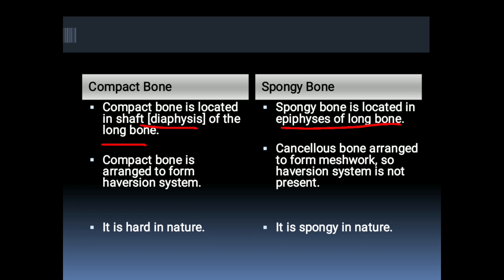The spongy bone is arranged to form a mesh work, while compact bone is arranged to form the Haversian system. So the Haversian system is not present in spongy bone — it is present in compact bone.